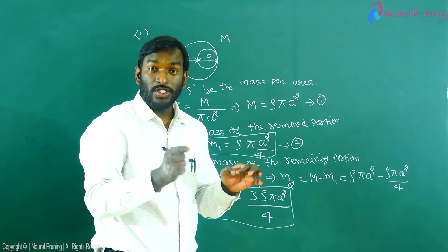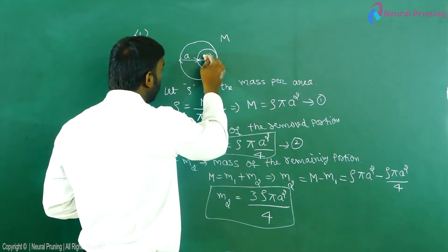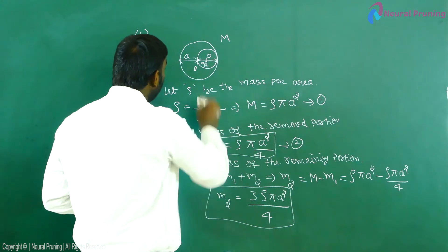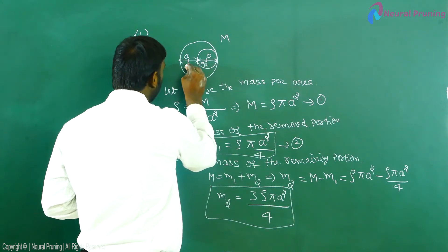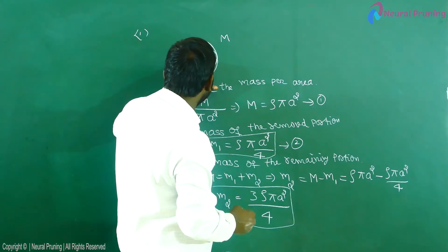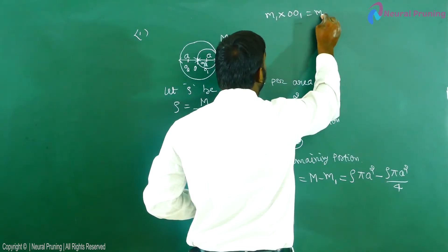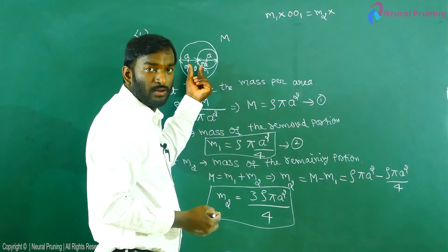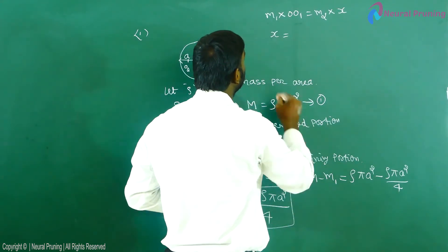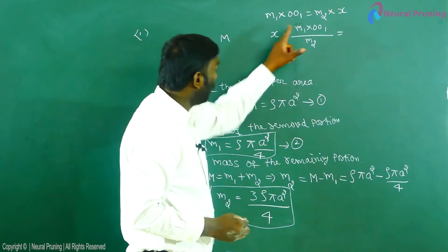How to find the position of center of mass of the remaining portion? We know the position of center of mass of the removed portion, which is at a/2 from the origin O. Let the unknown position of the remaining portion's center of mass be OO2, and let OO1 be at a/2. Using the relation m1 × OO1 = m2 × OO2, and since we don't know OO2, let it equal x.